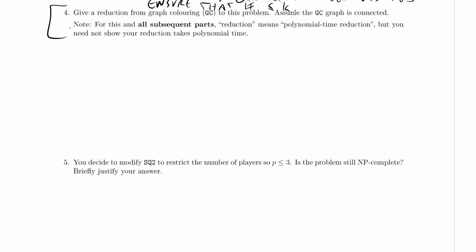So for this and all subsequent parts, reduction means polynomial time reduction, but you need not show your reduction takes polynomial time. Well, now, this is a funny place for this because there aren't any subsequent reductions. This was really meant to describe all of the reductions, and then separately you would prove that your reduction took polynomial time, but you'd always know that I meant reduction means polynomial time reduction. Let's put it this way. If on the exam I ask for a reduction, you better have a really good reason to assume that I mean any kind of reduction rather than a polynomial time reduction.